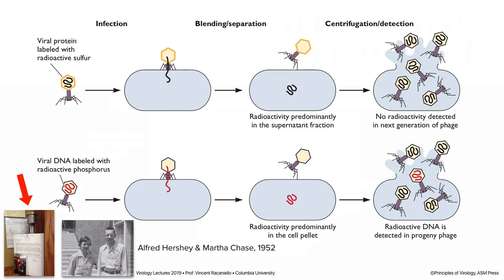This is actually the blender Hershey used, now in a museum at Cold Spring Harbor. I can't imagine putting radioactive material in a kitchen blender and blending it — you're generating a huge aerosol of radioactivity. But that's what was done in those days. We did lots of things that were not safe in the interest of science.